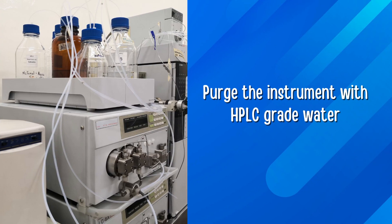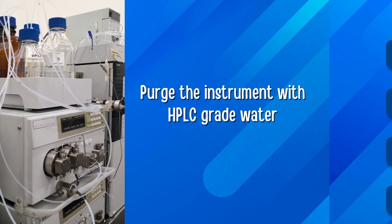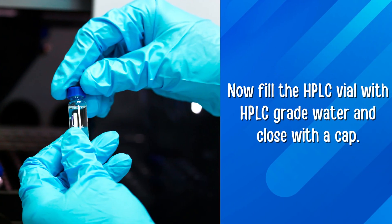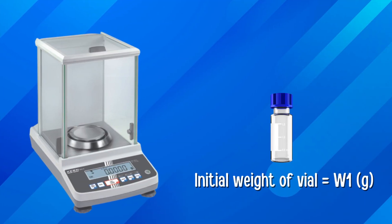Flush the instrument with HPLC grade water and program the HPLC system with chromatographic conditions such as mobile phase HPLC grade water, flow rate 1.0 ml per minute, runtime about 1 minute, and injection volume 20 µl. Now fill the HPLC vial with HPLC grade water and close with a cap. Weigh this vial using analytical weighing balance and record the weight in grams. This will give initial weight of vial as W1.